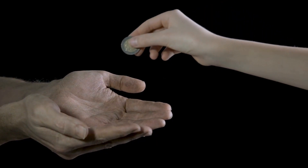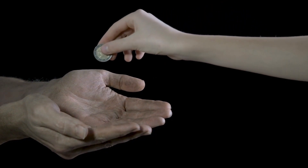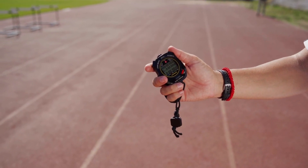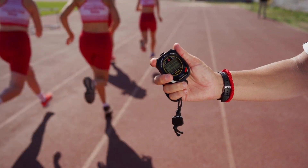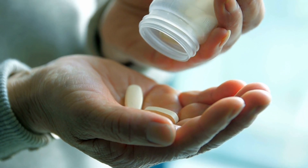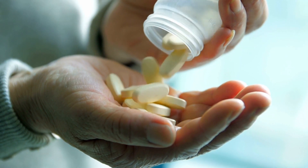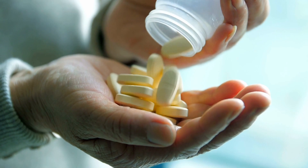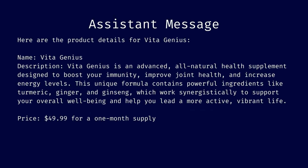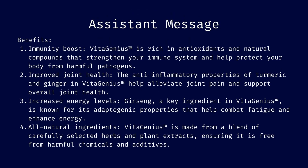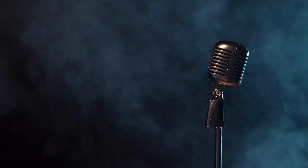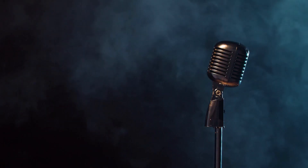I give the ChatGPT model a system message to be a charismatic fitness expert wanting to provide information for a made-up health supplement, VitaGenius. Then I send an assistant message with the details of the VitaGenius product. I've put the details of the messages on screen for you to read later if you are interested. And this is what happened when I asked the virtual assistant about VitaGenius.